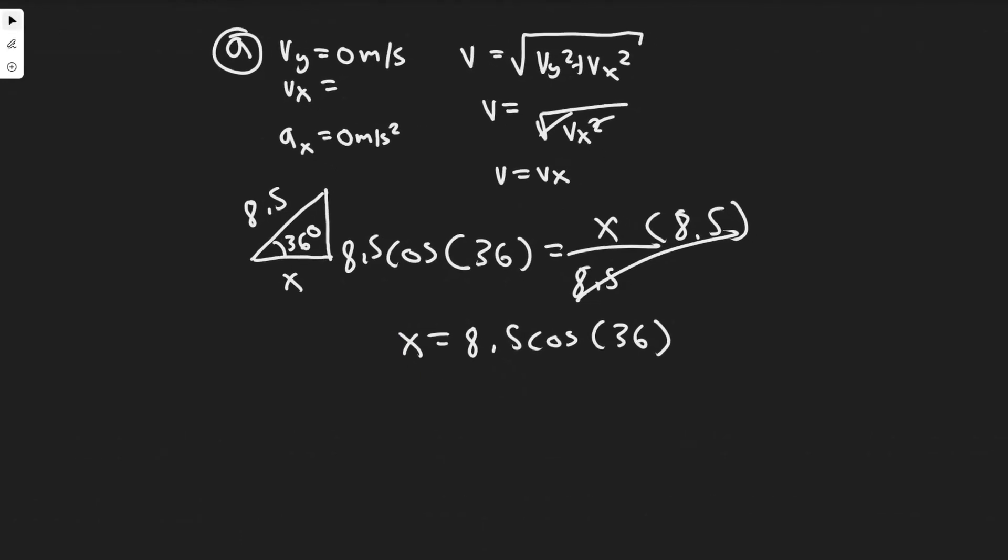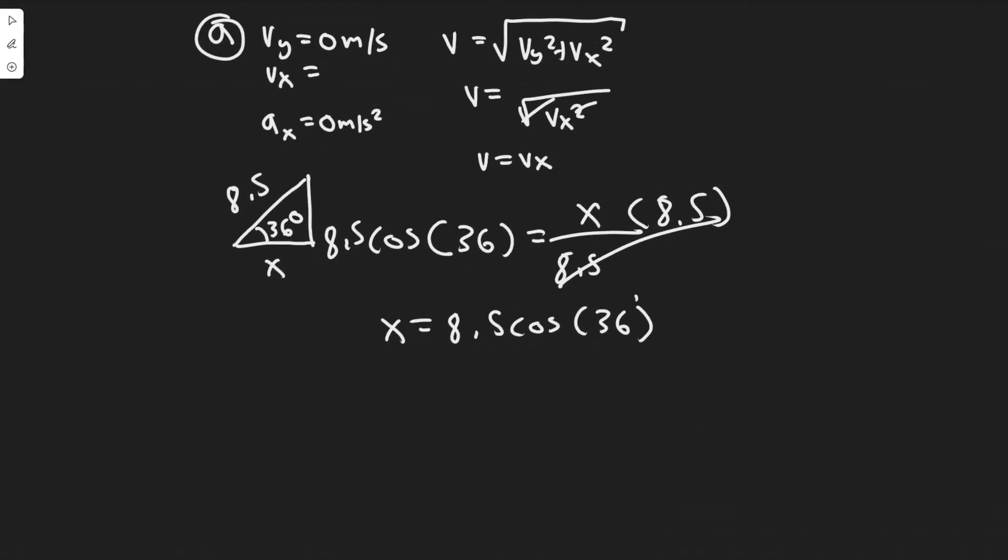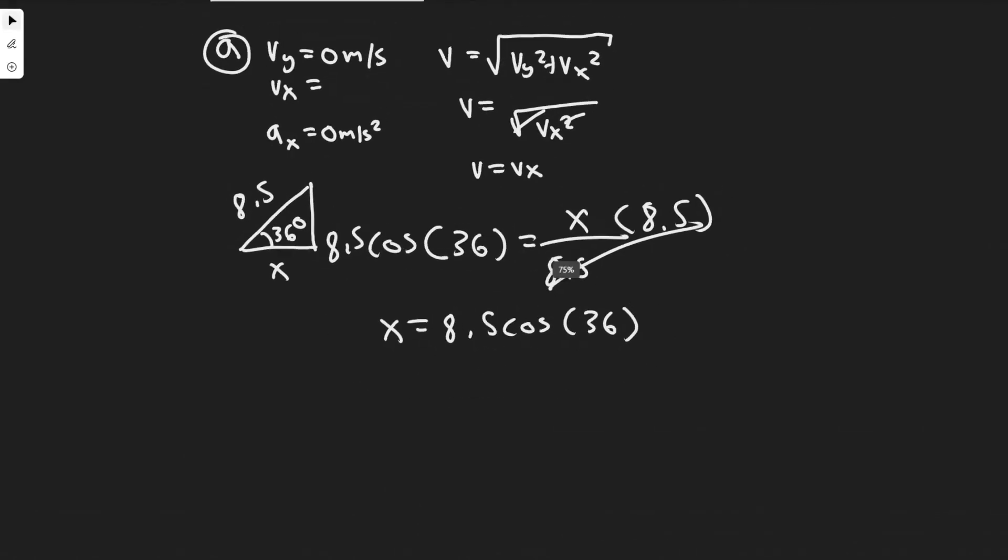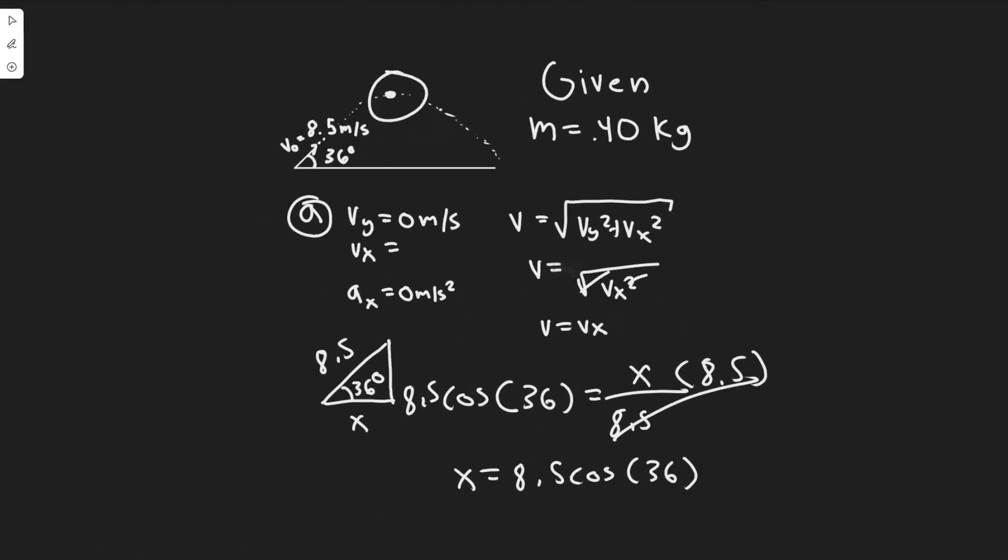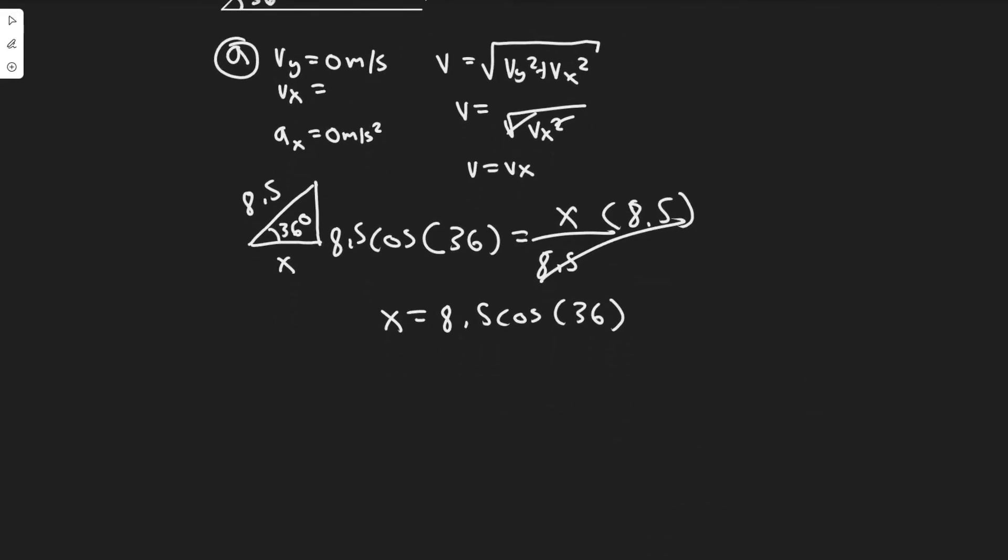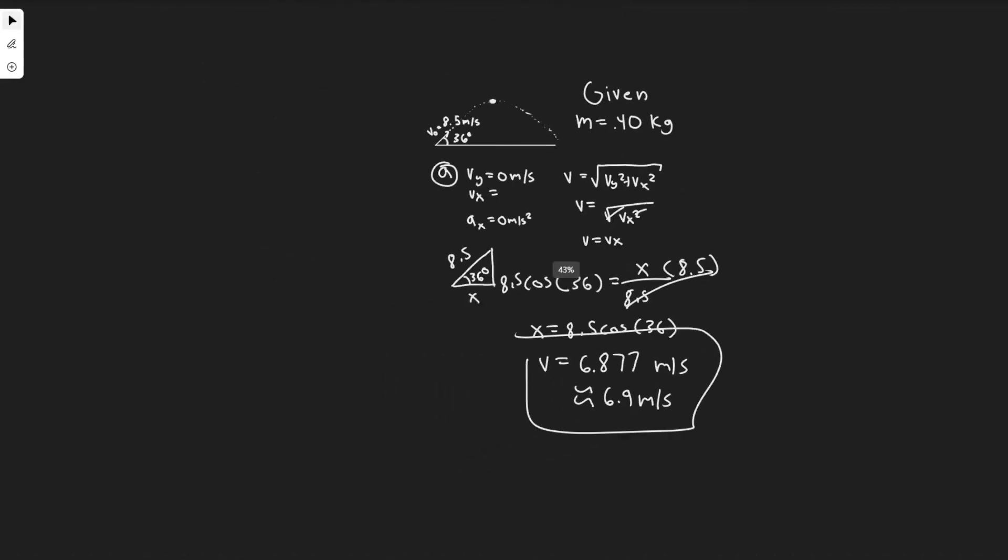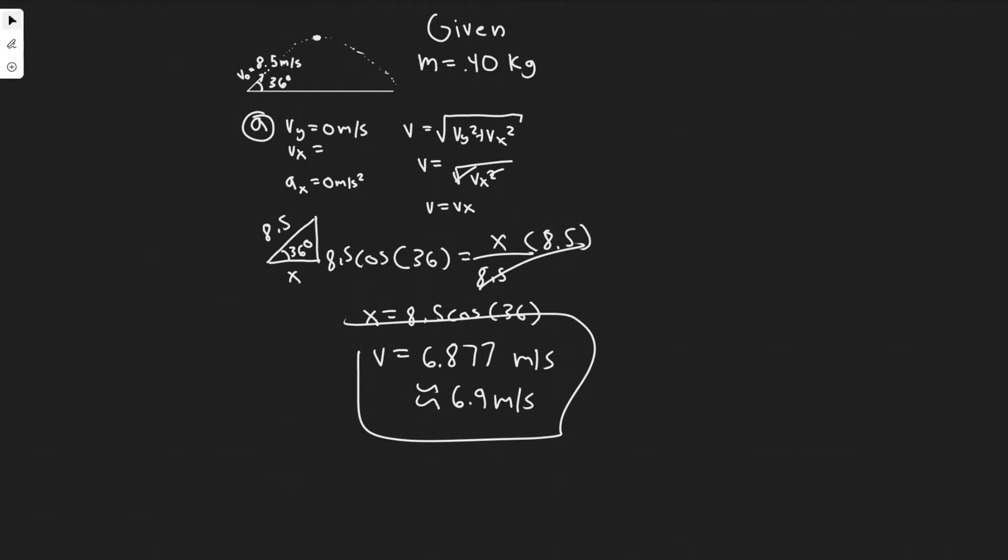This is our initial x component, and as we said it's equal to the x component of the velocity at the highest point, which we know is just equal to its speed since its velocity in the y is zero at that point. Therefore our answer for part a is just going to be 8.5 cos(36), and plugging this in you're going to get 6.877. You can round this however you'd like - about 6.9 meters per second.